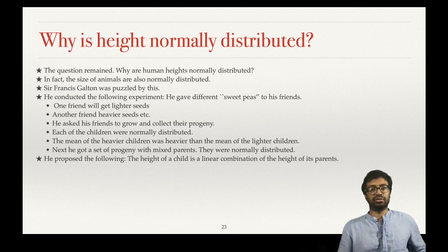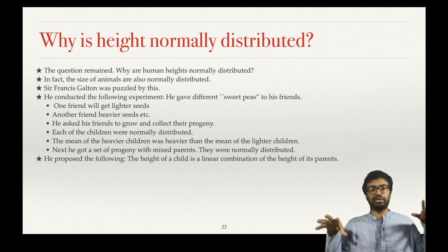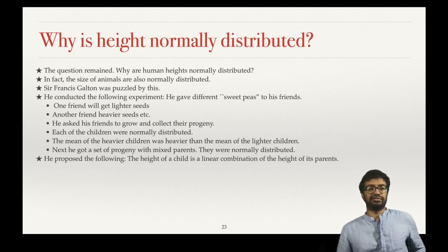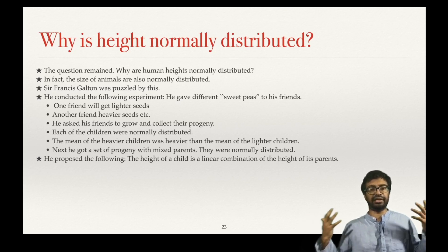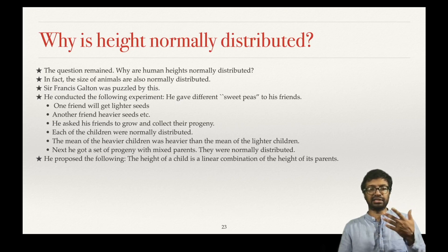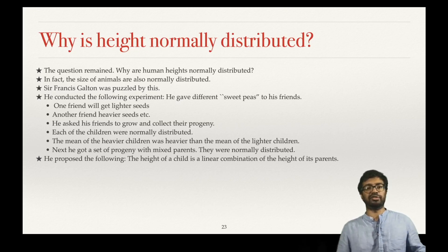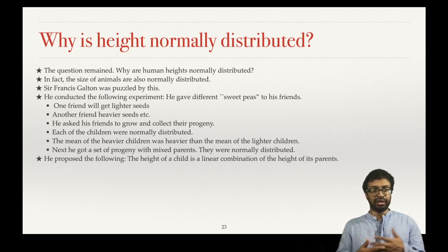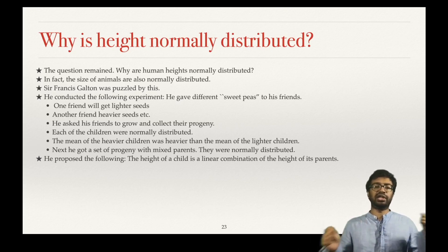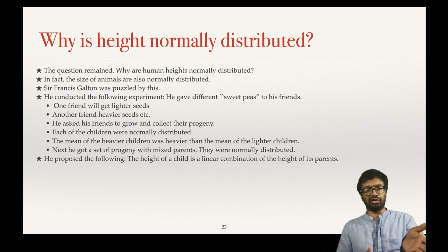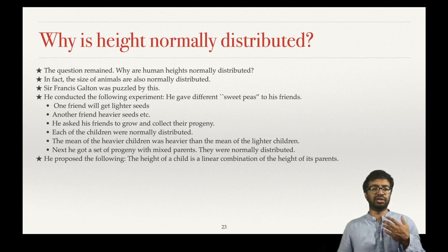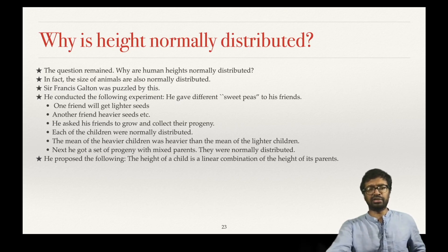It is clear this is a normal distribution. Galton proposed that the height of a child is a linear combination of the heights of its parents — maybe half from mother and half from father, or three quarters from one and one quarter from the other. He then used the known mathematical theorem that the sum of independent normal random variables is normal. Any linear combination of normal random variables is also normally distributed, with mean and variance being the corresponding linear combinations.